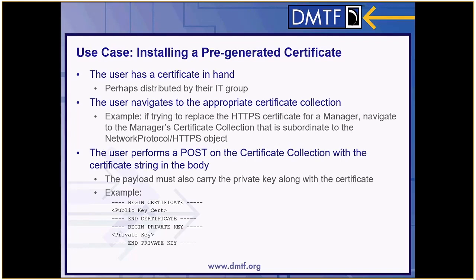Another workflow involves a pre-generated certificate — for example, when an organization has a policy that all systems must be installed with a given certificate. Since you already have the certificate in hand, you navigate to the appropriate certificate collection, such as the manager's certificate collection subordinate to the HTTPS protocol within the network protocol resource, and POST to that collection with the certificate string in the body. In this case, you may need to provide the private key that originally came with that certificate as one concatenated string, using begin and end certificate tags immediately followed by begin and end private key tags.